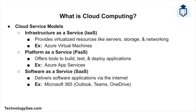Cloud computing is categorized into three primary service models. Infrastructure as a Service provides virtualized computing resources such as servers, storage, and networking — an example is Azure Virtual Machines. Platform as a Service delivers a development platform and tools to build, test, and deploy applications — an example is Azure Application Services. Software as a Service offers software applications via the internet, such as Microsoft 365 products like Outlook, Teams, and OneDrive. Each service model provides different levels of control, flexibility, and management.